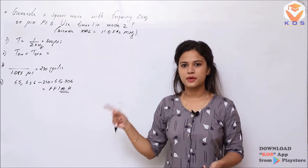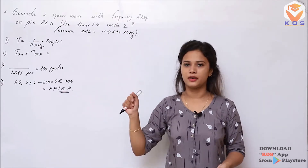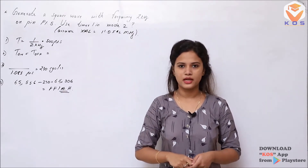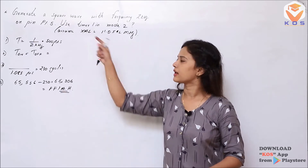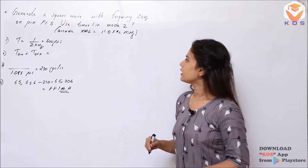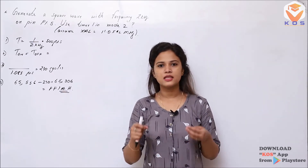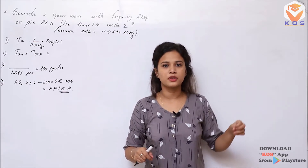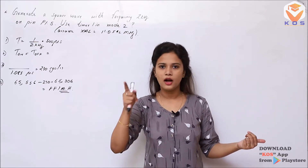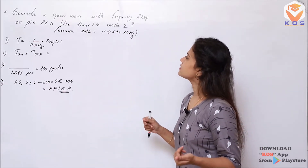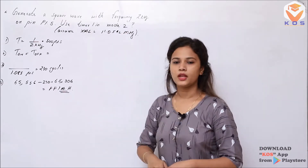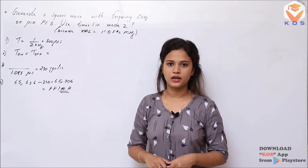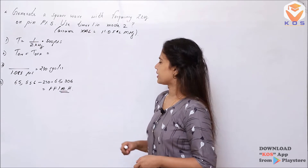P1.5 is the 5th pin on port P1. The square wave output is obtained at pin P1.5. If we produce the output, it will be complemented — that's the logic. Also, in this case, use Timer 1 and Mode 2. That's what we need: Timer 1 and Mode 2. We need to configure the TMOD register.